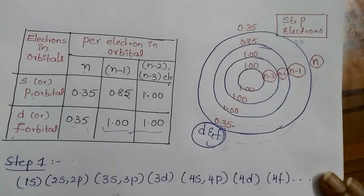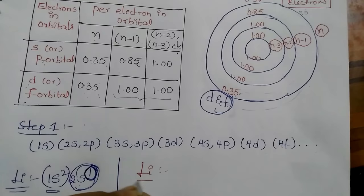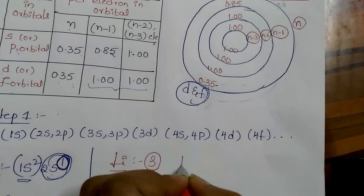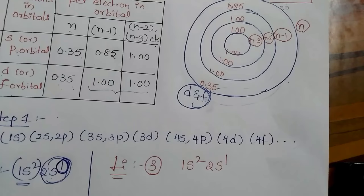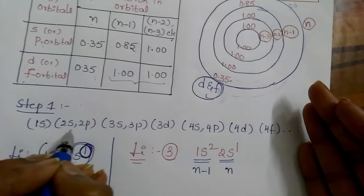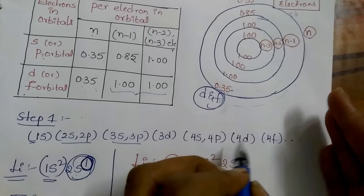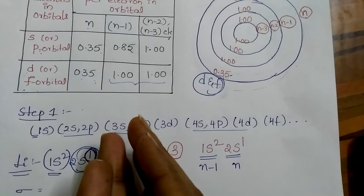Let us see an example. Lithium, atomic number 3, electronic configuration: 1s², 2s¹. This 1s² shell is the N minus 1 shell and the 2s¹ is the N shell. For simplicity, write the electronic configuration and arrange it based on the N value — N=1, N=2, N=3, N=4 and so on.